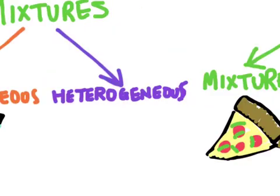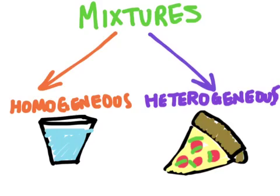An example of a heterogeneous mixture is that slice of pizza. As you can see, we can see the different parts on this pizza. We can see the cheese, the pepperoni, the green peppers, and the crust. And so this is a heterogeneous mixture.